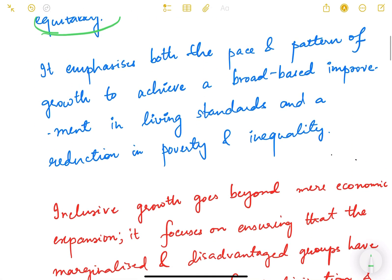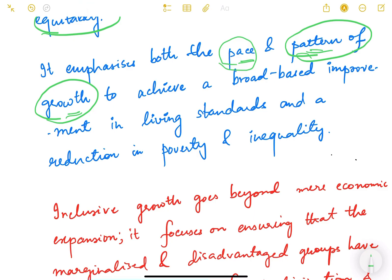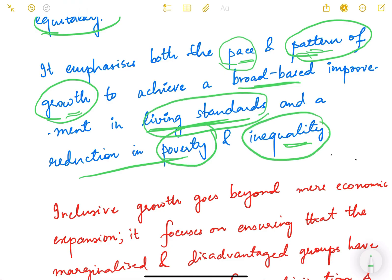Inclusive growth emphasizes both the pace and pattern of growth — meaning how much the growth rate is (whether 7%, 8%, or 10%) and how that growth is affecting different sections of society and different sectors. The ultimate goal of inclusive growth is to achieve broad-based improvement in living standards and reduction in poverty and inequality.